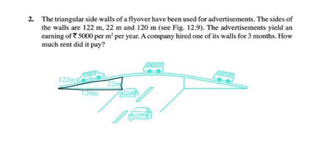The advertisement rate is 5,000 rupees per m² per year. A company hired one of its walls for three months. How much did it pay?